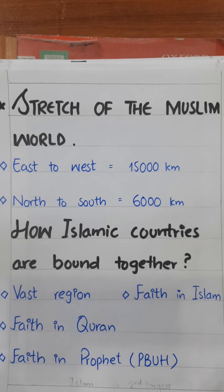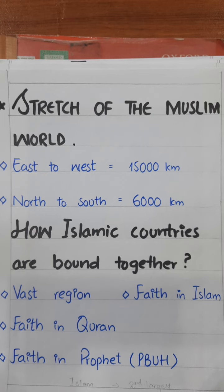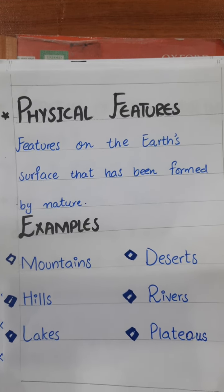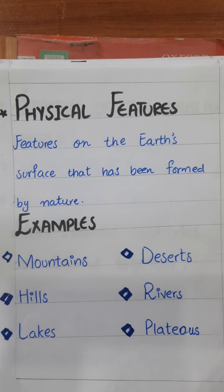Now we will talk about geography further. What is geography? The study of earth. In geography, we are talking about the physical and political features of the earth. So when we talk about physical features, what are they? Physical features are those on the earth's surface that have been formed by nature.